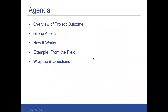Today we're going to start with a brief overview of Project Outcome. Then we'll get into some details of group access, how it works, some of the logistics, what it would look like for you to set up a group account. Emily will be sharing a couple examples from public library groups, and we will leave plenty of time for questions at the end. I do want to be upfront and say that there is a one-time fee to set up a group account, based on the number of institutions in the group.